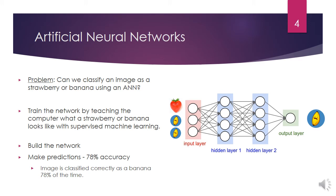Next, the ANN is built. Finally, we can make predictions about the image and have a 78% accuracy that the image will be classified correctly as a banana.